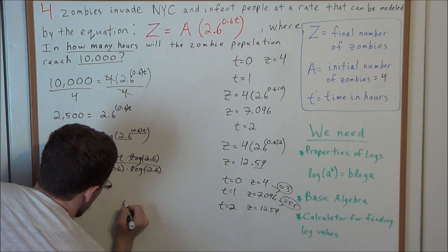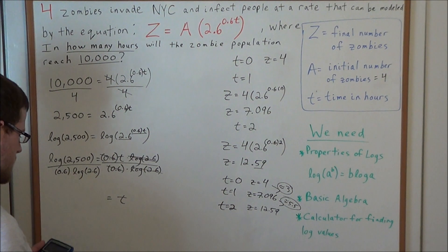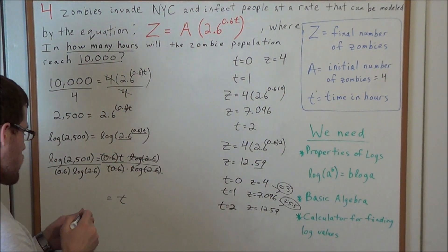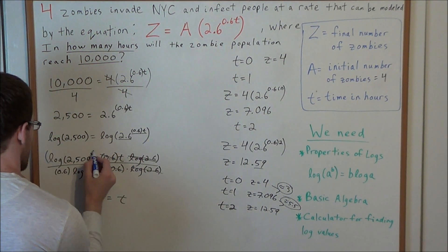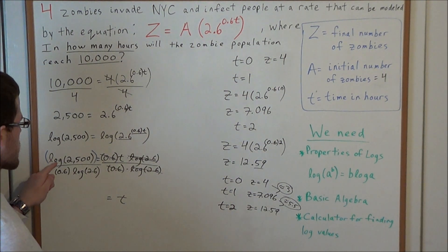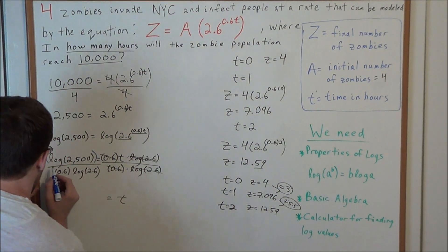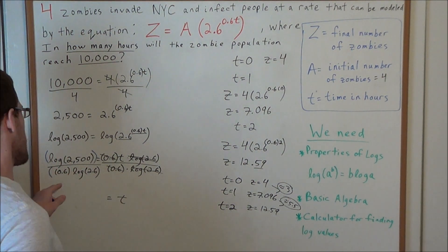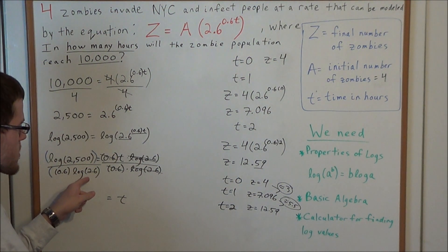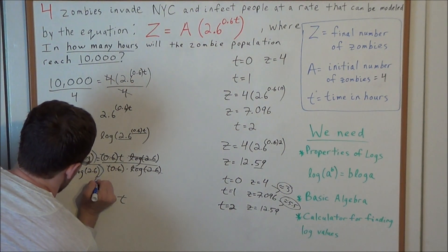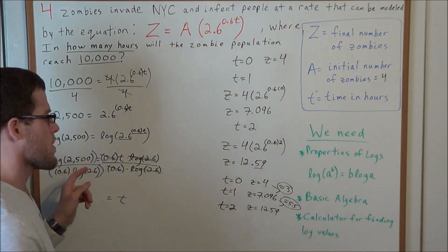So T equals log(2500) divided by the quantity 0.6 times log(2.6). If doing this on a calculator all in one step, I advise adding extra parentheses: open parenthesis, log of 2500, close parenthesis, divided by open parenthesis, 0.6 times log(2.6), close parenthesis. The calculator can sometimes misread it without those extra parentheses.